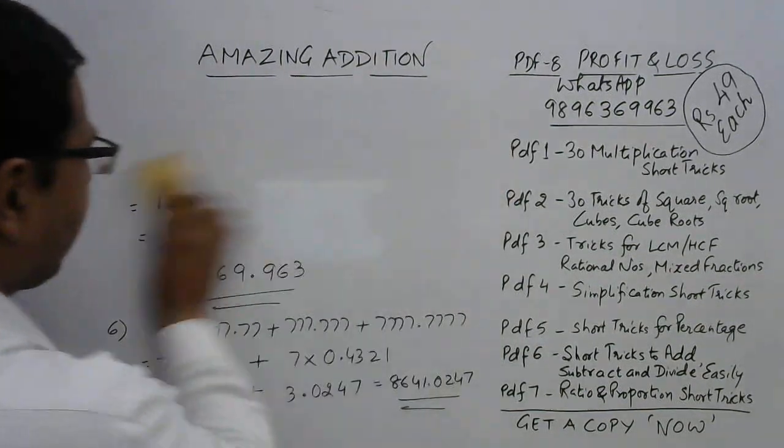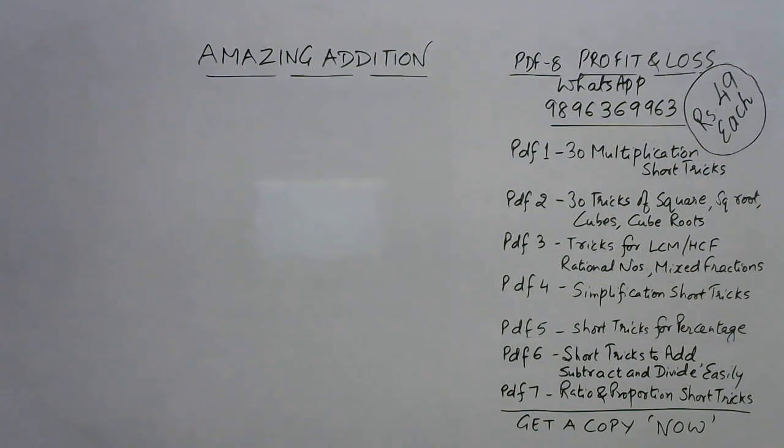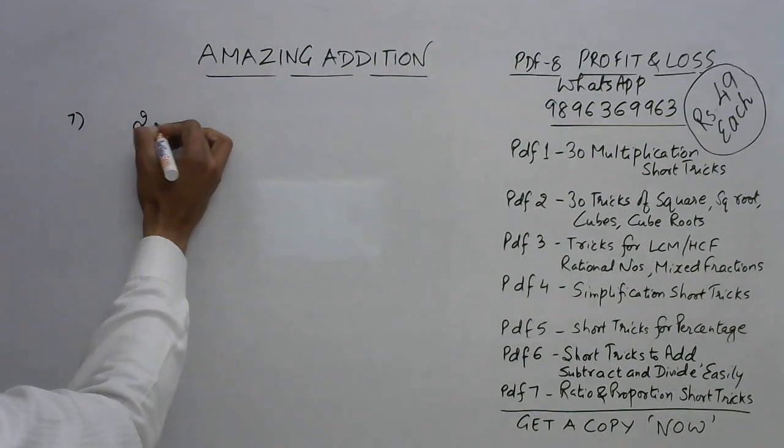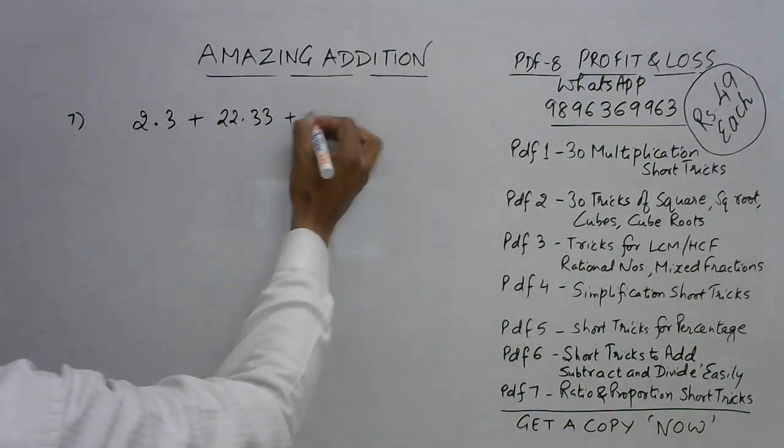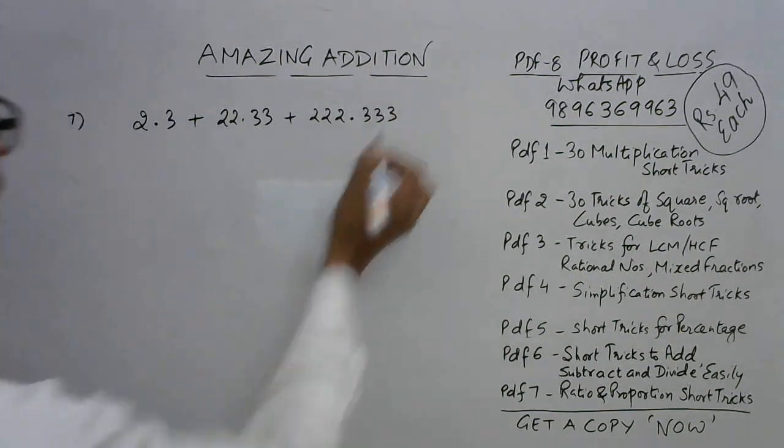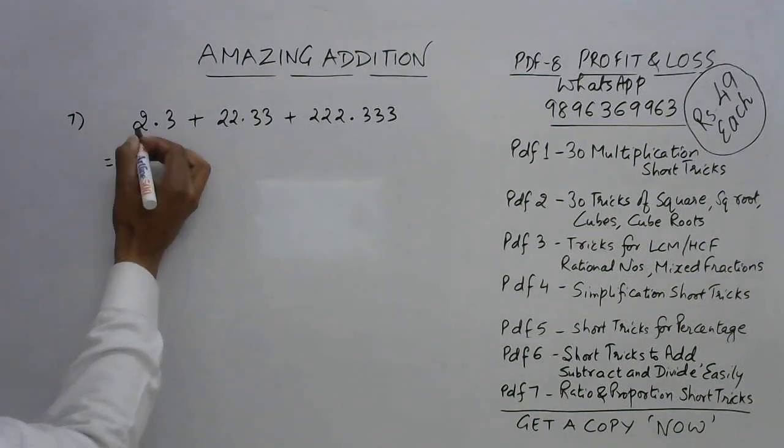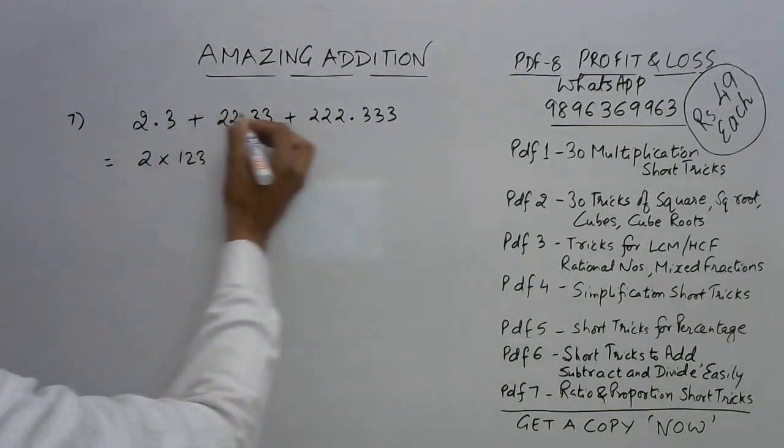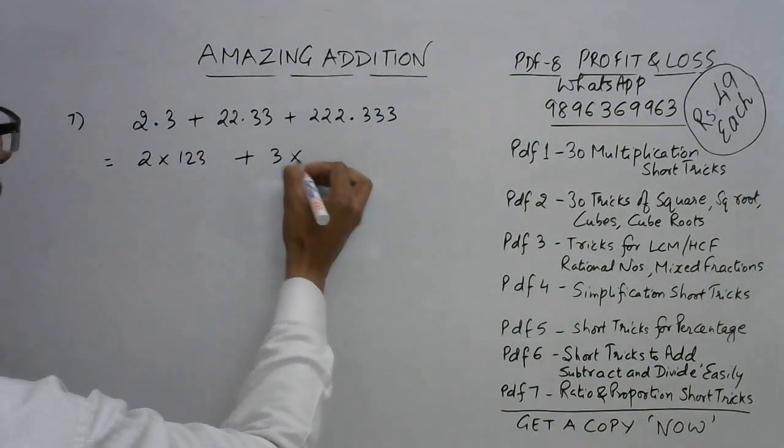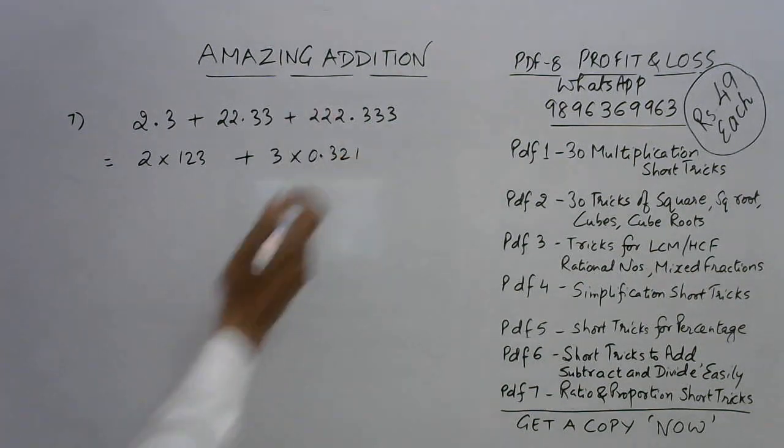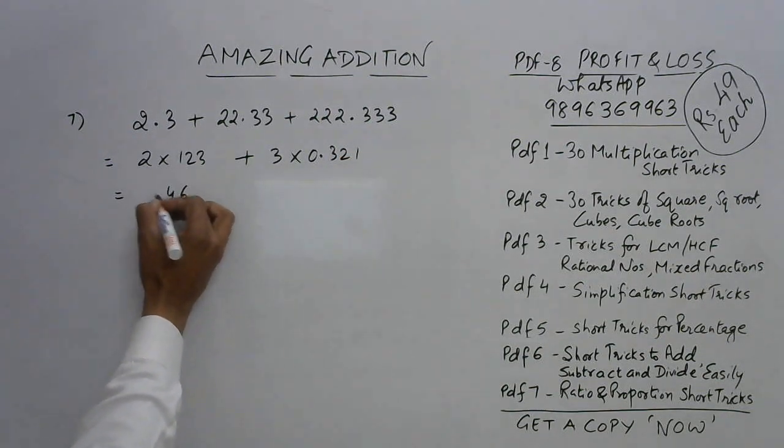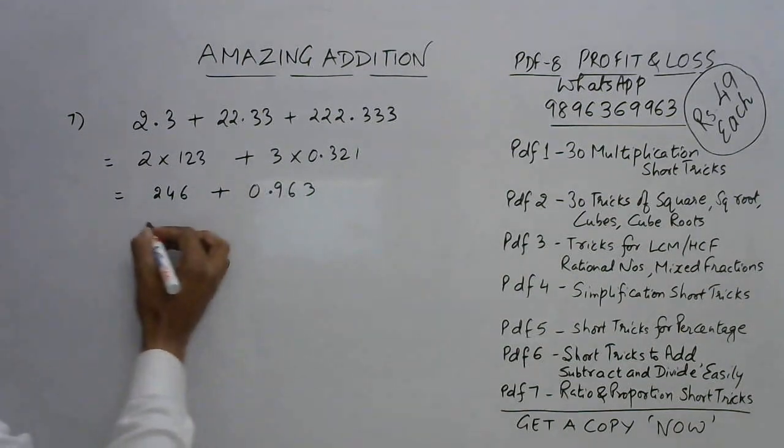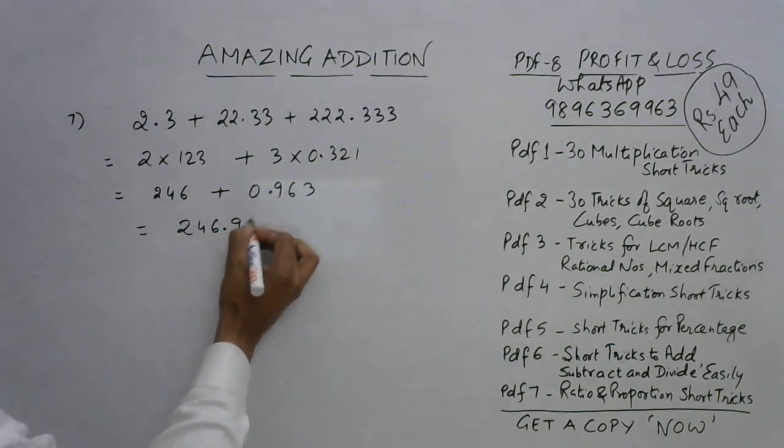Let's have one more question now. This is question number 7 for this particular video and I'm sure this question will leave you surprised. See, I am generalizing that particular question to 2.3 + 22.33 + 222.333. Now see I have changed the number before the decimal and after the decimal. So here in front of the decimal we have 2, 22, 222, so this will be 2×123 because there are three numbers, plus after the decimal we have 3, so 3×0.321. So reverse this order after decimal. This will become 246 and here we have 0.963. So the answer is 246.963, very very easy.